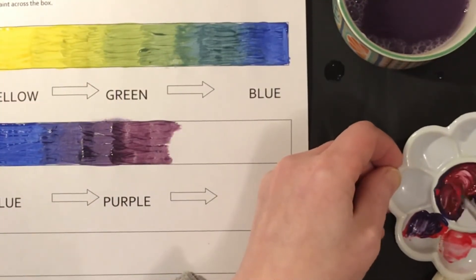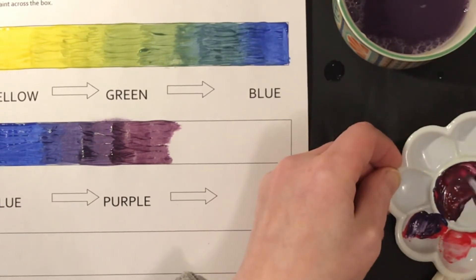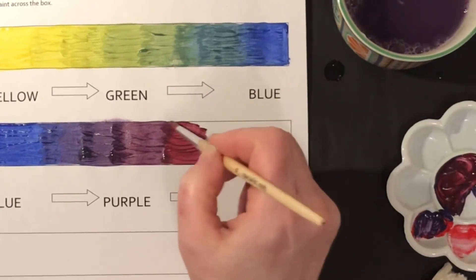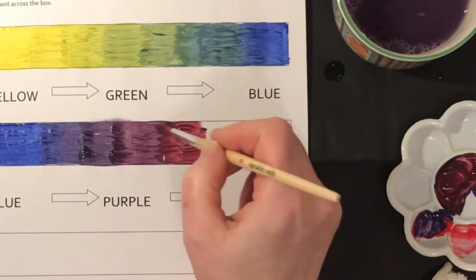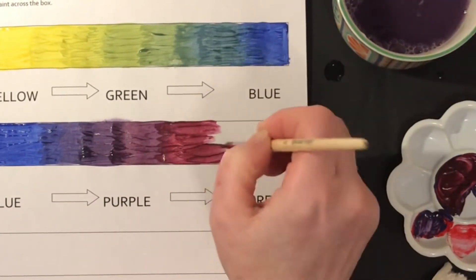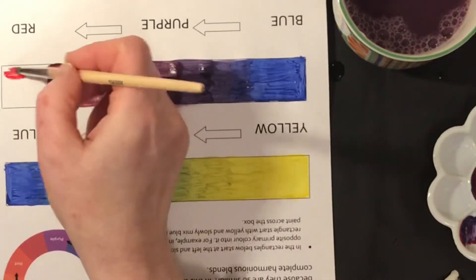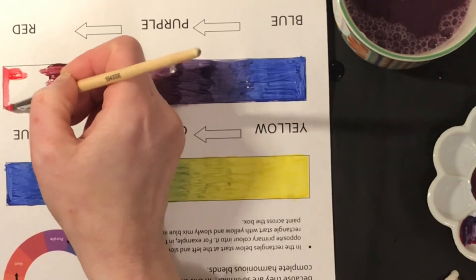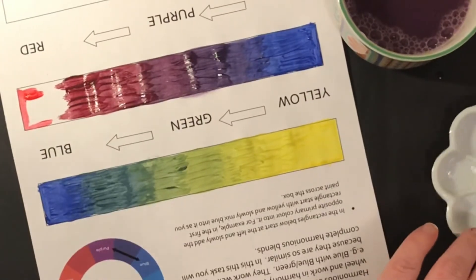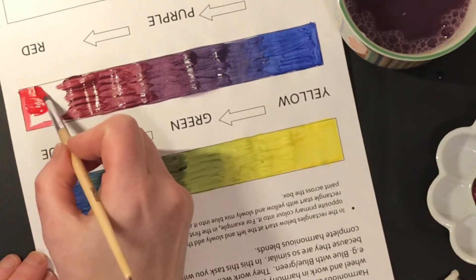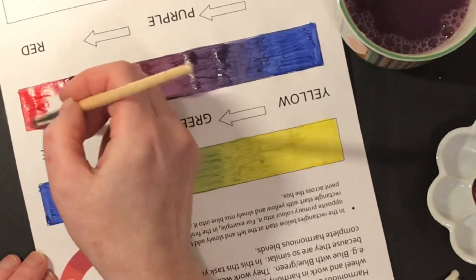Here I'm adding in a little bit more red so that you get a red-purple. And here you can see I've turned my page upside down again and I'm starting at the other end, adding in my red to blend it in with the red-purple. And that's your second strip completed.